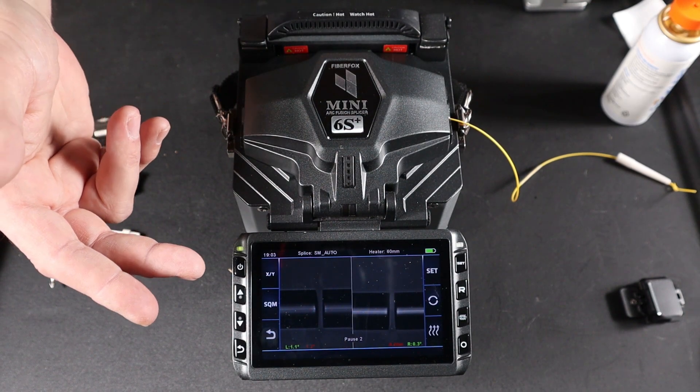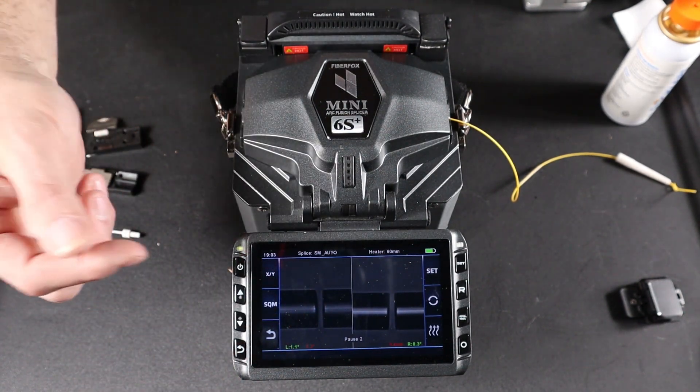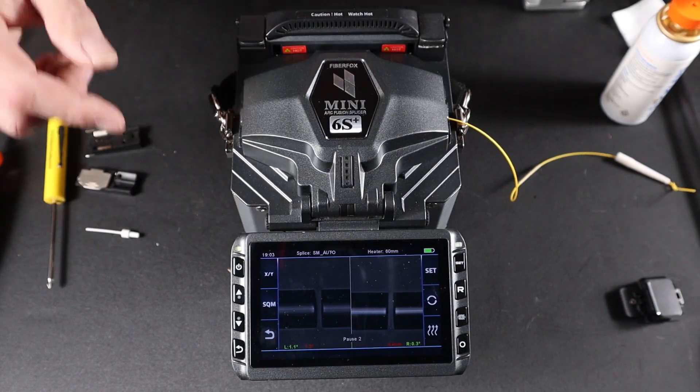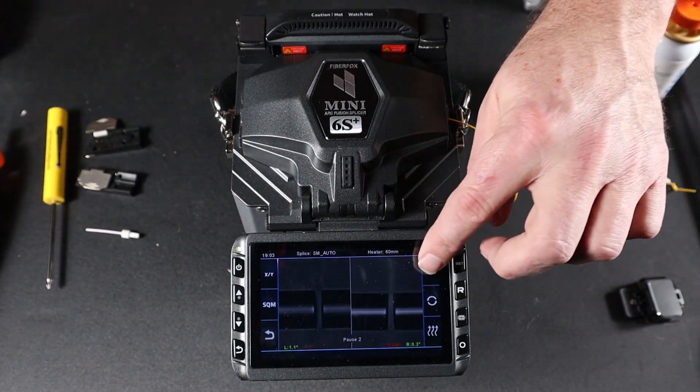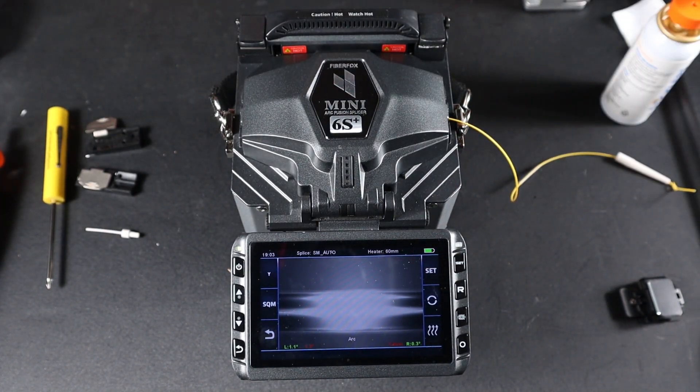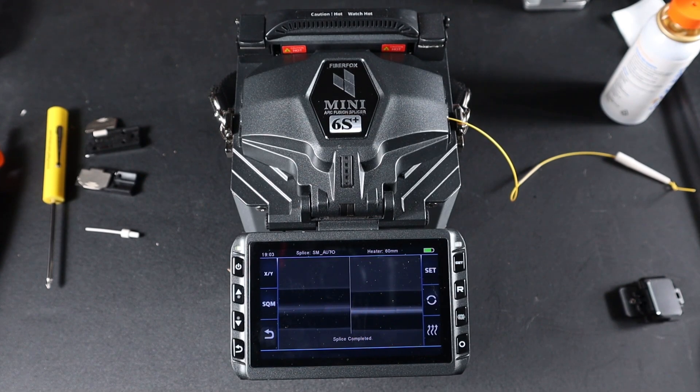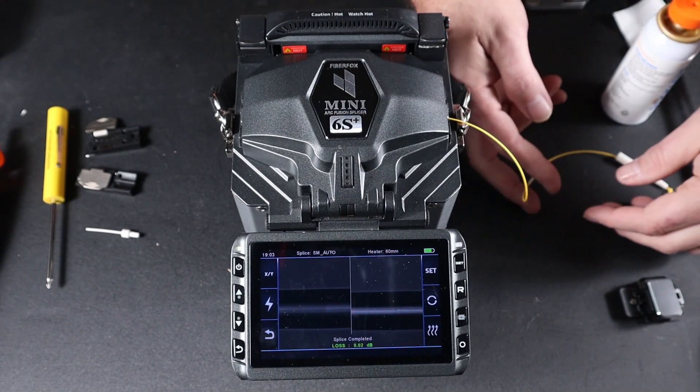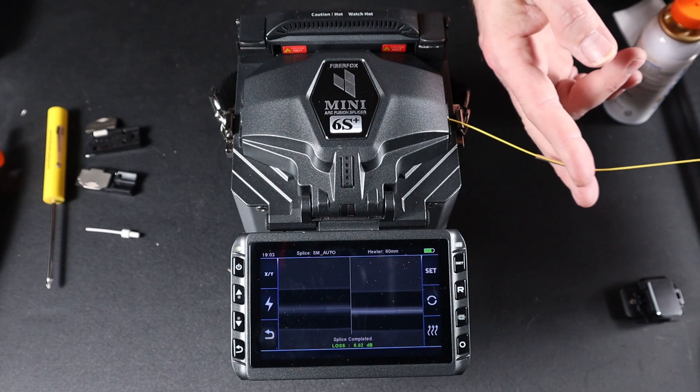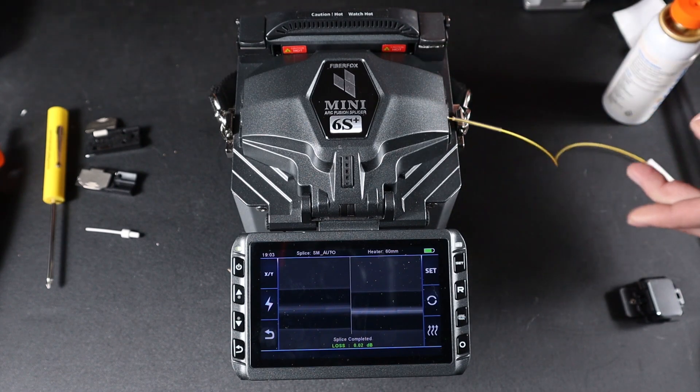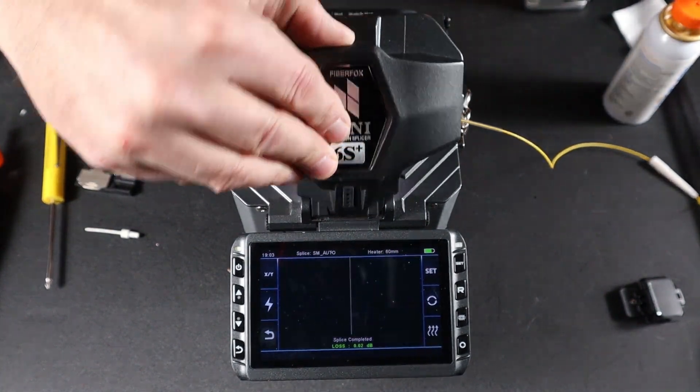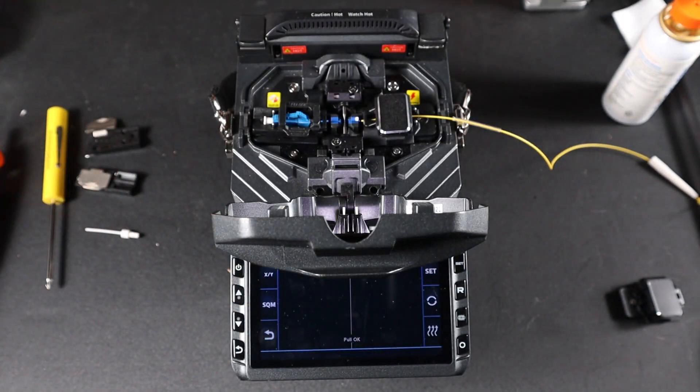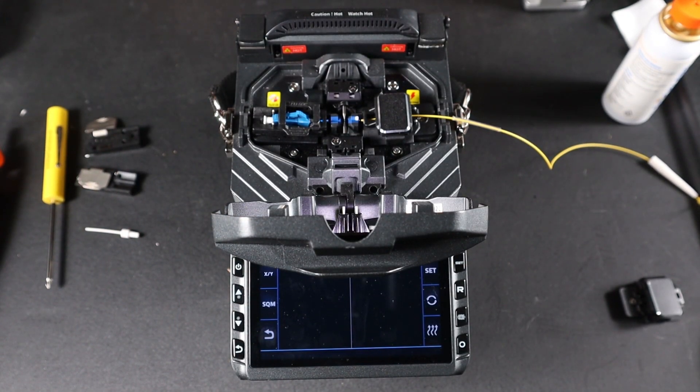Once you've paused and you're happy with your cleave angles, again, you can press set or press the button on the screen to perform your splice. At this point, bring up your heat shrink tube to your wind cover. Open your wind cover. Allow the tensile test to be completed.